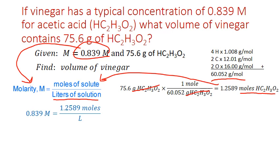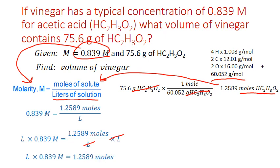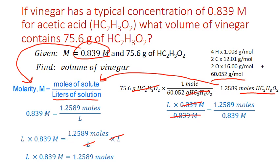To rearrange for liters, we need to get it out of the denominator first. Whenever solving for a variable in the denominator, we multiply both sides by L. This cancels L on the right-hand side, leaving 1.2589 moles, while the left side now has L times the molarity. We then divide both sides by 0.839 moles per liter to isolate L, giving 1.2589 moles divided by 0.839 moles per liter — the mole units cancel, leaving liters.